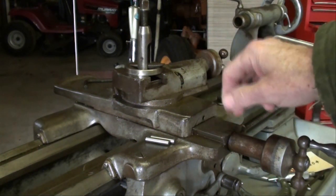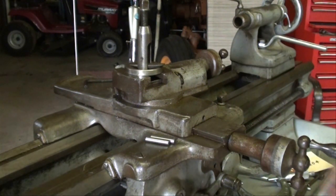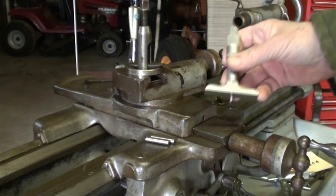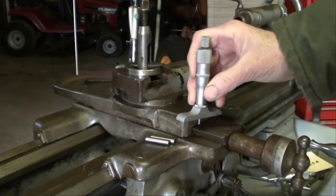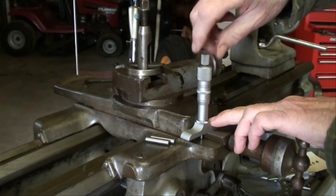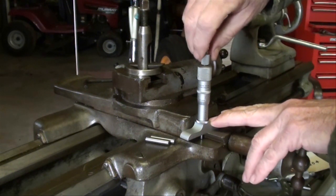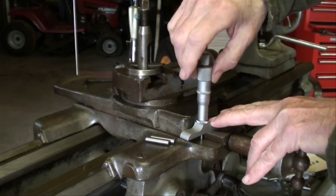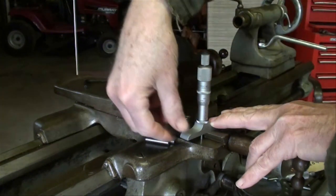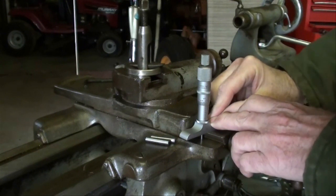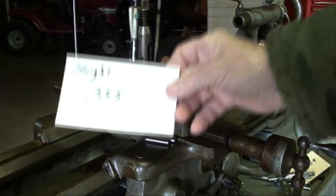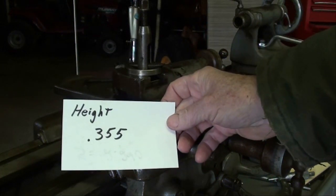We're measuring the male and going to make a female. The first thing you need to do is check the depth—they actually call it the height in the formula. Using a depth mic, wipe it clean. We don't want any chips or debris. Hold it down real tight with my finger and bring that down until it just barely touches. We are getting 355 thousandths.